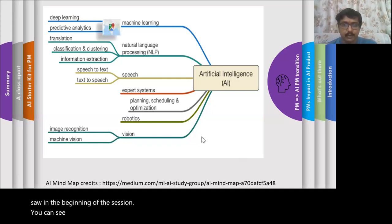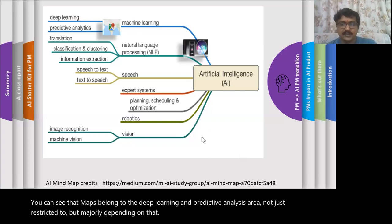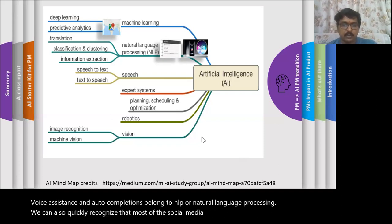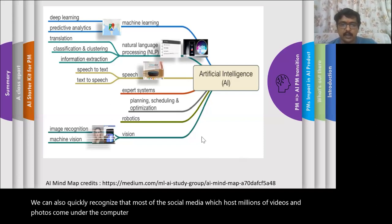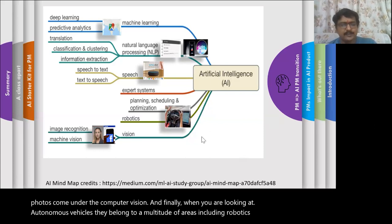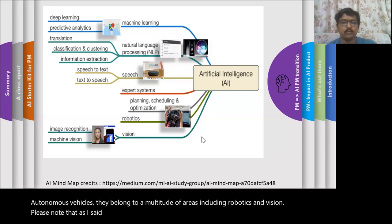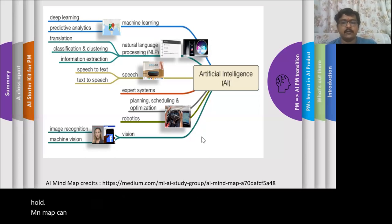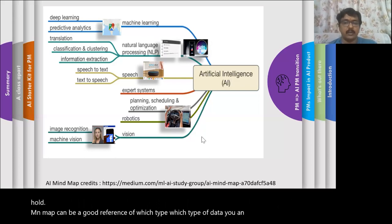To help get better insights, let's look at each of the products we saw at the beginning of the session. Maps belong to the deep learning and predictive analysis area, not just restricted to that but majorly depending on it. Voice assistants and auto-completions belong to NLP, or natural language processing. Most social media, which hosts millions of videos and photos, comes under computer vision. And autonomous vehicles belong to a multitude of areas including robotics and vision. Please note that these products often belong to more than one category of AI or ML, depending on the vastness of their features. The AI mind map can be a good reference for which type of data you as an AI PM possess and which type of AI or ML your product belongs to.